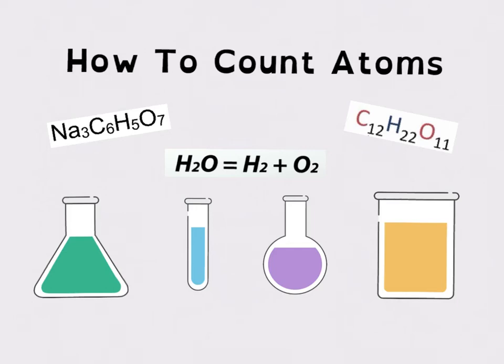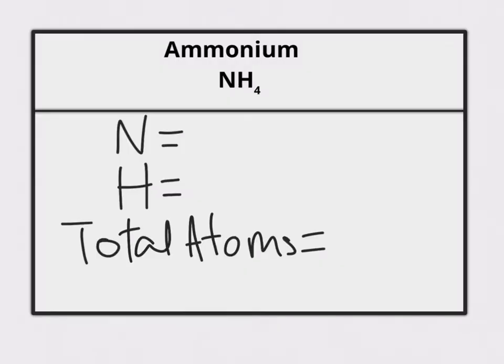In today's lesson, we will be learning how to count atoms in a chemical formula. Let's start with ammonium. The chemical formula for ammonium is NH4.